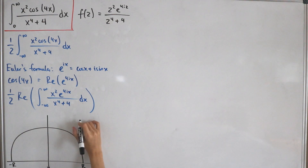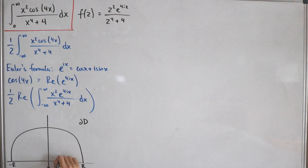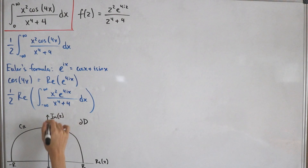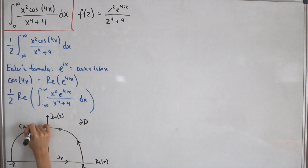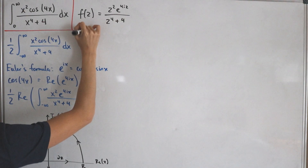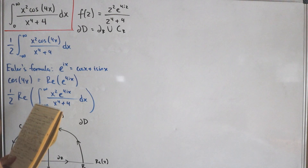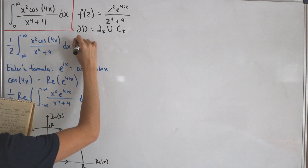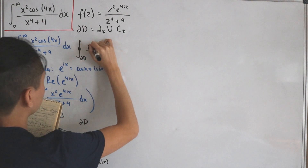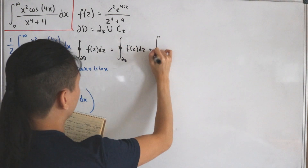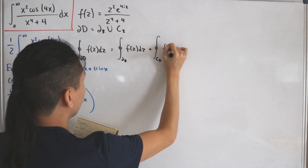We call the entire contour the boundary of D, denoted ∂D. The real axis segment is called ∂R, and the arc is called C_R. Going in the positive (counterclockwise) orientation, ∂D is the union of ∂R and C_R. So our contour integral over ∂D of f(z) dz splits into the integral over ∂R plus the integral over C_R of f(z) dz.